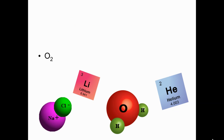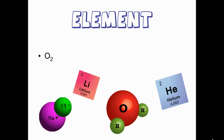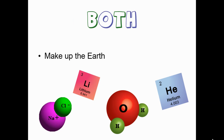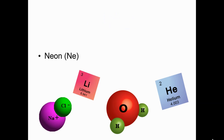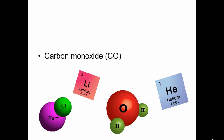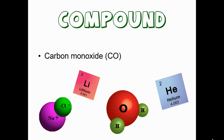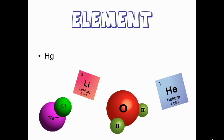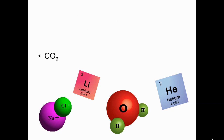O2 is a representation of an element. Things that make up the earth are both elements and compounds. Neon is an example of an element. Carbon monoxide is an example of a compound. Hg is a representation of an element. CO2 is a representation of a compound.